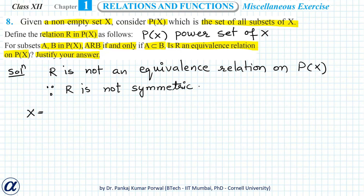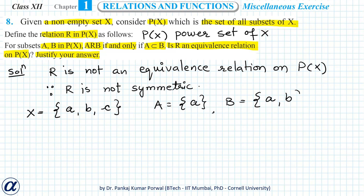Let's say X is a set containing elements a, b, and c. Let A be the set containing element a, and B be the set containing elements a and b. Clearly A and B are subsets of X, so they both belong to the power set of X.